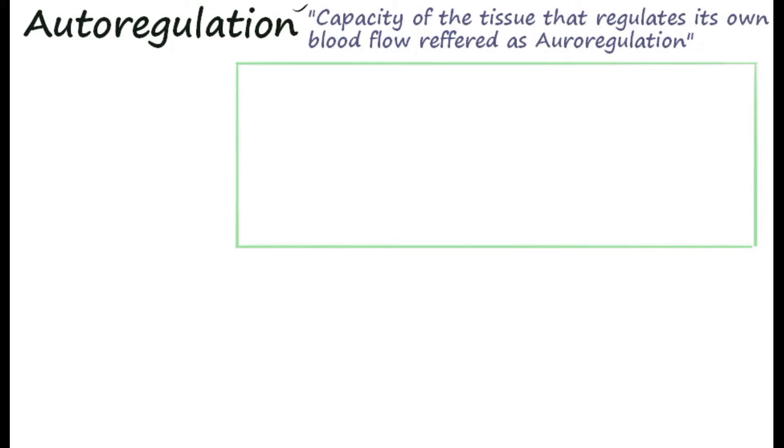In this video I would like to explain about the autoregulation of the blood vessel supplying to a particular tissue. Autoregulation is one of the important physiological functions in the cardiovascular system which maintains constant blood flow despite fluctuations in blood pressure. The definition: the capacity of the tissue to regulate its own blood flow is referred to as autoregulation — flow is constant despite fluctuations in blood pressure.